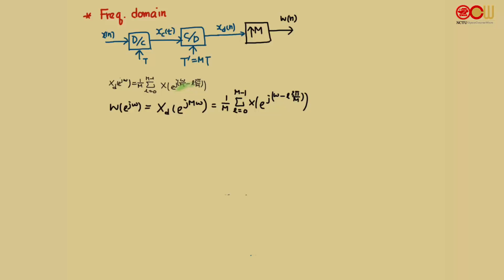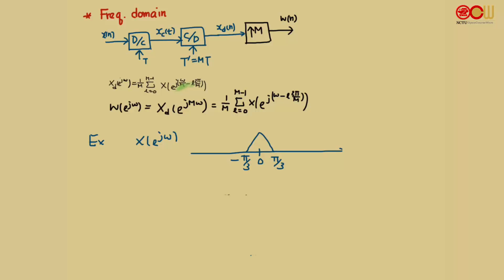After we find W, we can then do frequency scaling to get back x_d. As an example, suppose X(e^{jω}) has a triangular shape from −π/3 to π/3, with this being ω, π, and −π. Let's first draw W(e^{jω}), and from W we can then draw X_d(e^{jω}), which is related to W by W(e^{jω/M}). Let's take M equal to 3.